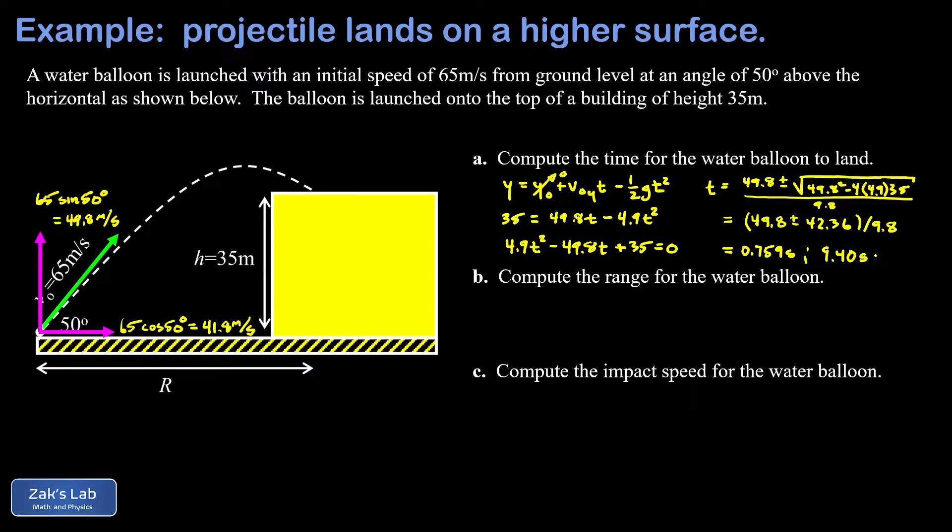Now we have to ask, which time are we actually interested in here? It's useful to understand why we got two solutions. What we plugged into the mathematics was a height of 35 meters, and we're just trying to find out what time it is when the height is 35 meters. Well, there are two different locations where this occurs. There's the location when the balloon was on its way up—it hit a height of 35 meters at that smaller time of 0.759 seconds. And then when the balloon is on its way down, we hit 35 meters again on the way down. That's when the impact actually occurs. So the larger time is what we want, and we've got our flight time of 9.40 seconds.